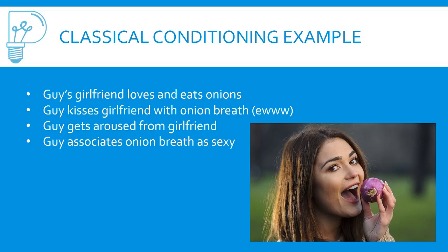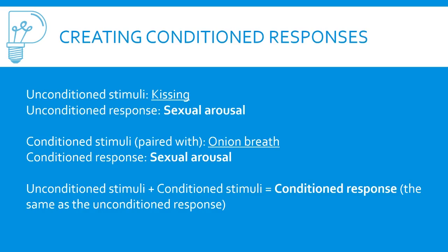Here's another example. A guy's girlfriend loves to eat onions, so she has onion breath when they kiss. Eventually the guy becomes psychologically and sexually aroused from kissing her, and he associates that onion breath as something sexually attractive. Using the same terms: the unconditioned stimulus is kissing, the unconditioned response is sexual arousal, the conditioned stimulus is onion breath, and the conditioned response is the same — sexual arousal.